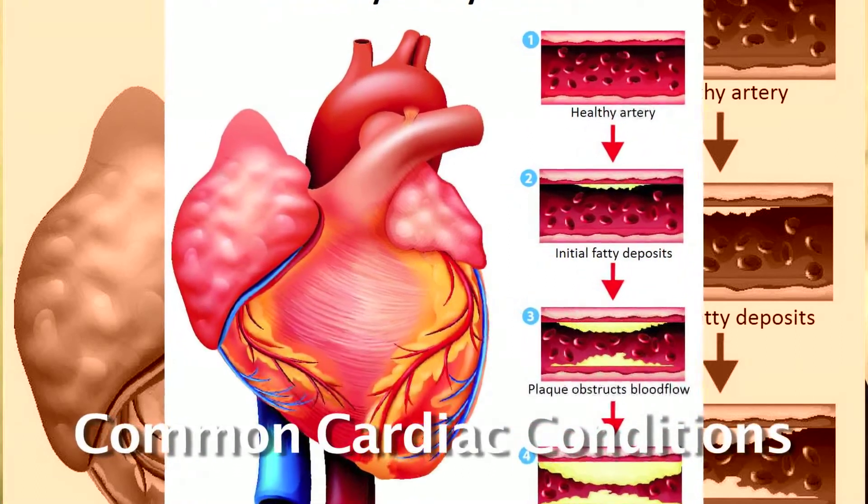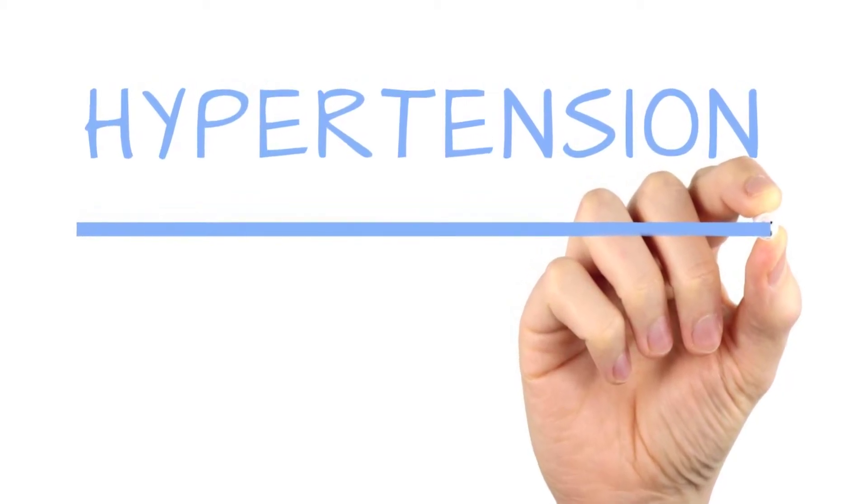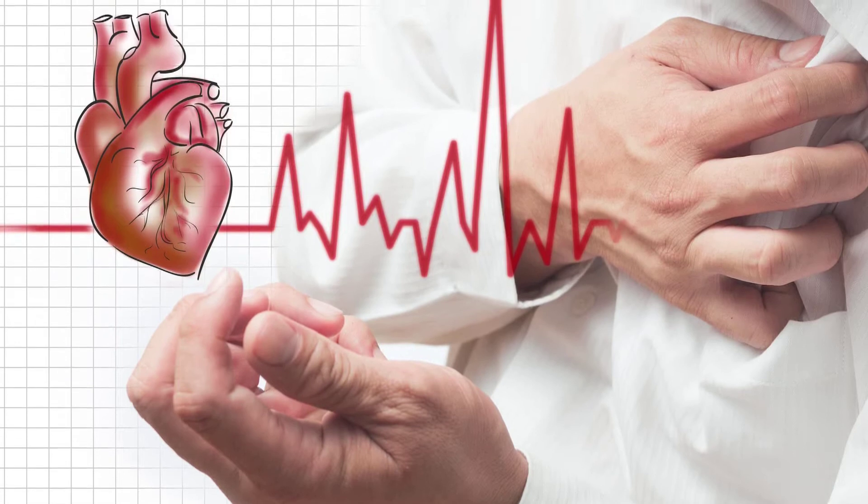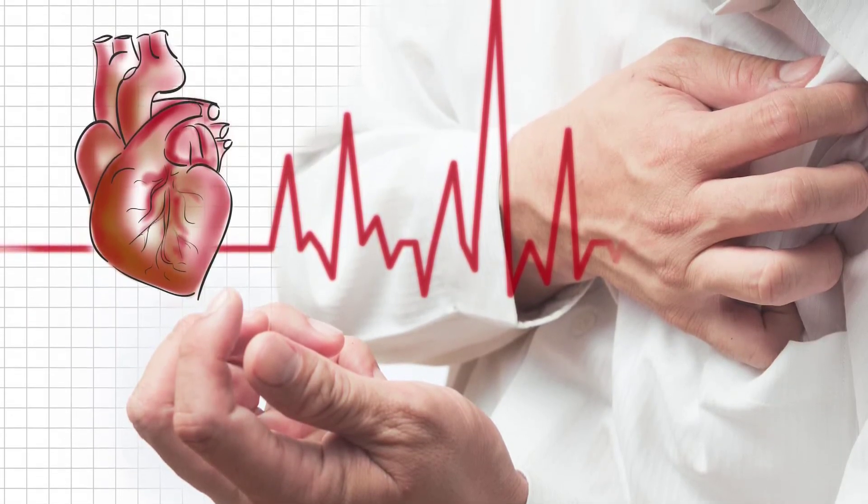Today I'd like to discuss some of the most common cardiac conditions. Number one: coronary artery disease — disease or damage of the coronary arteries, the major blood vessels of the heart. Number two: hypertension, also known as high blood pressure, where the pressure of blood flowing through the arteries is increased. Number three: cardiac arrest — sudden unexpected loss of heart function, breathing, and consciousness. Number four: congestive heart failure — failure of the heart to pump sufficient blood to the rest of the body. Number five: arrhythmias — improper beating of the heart.